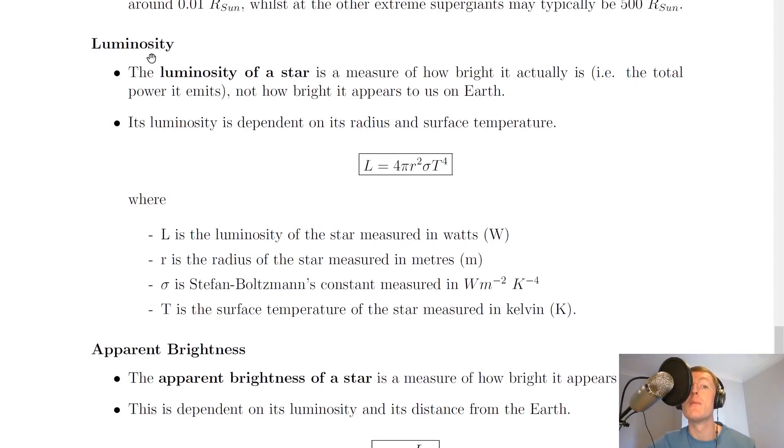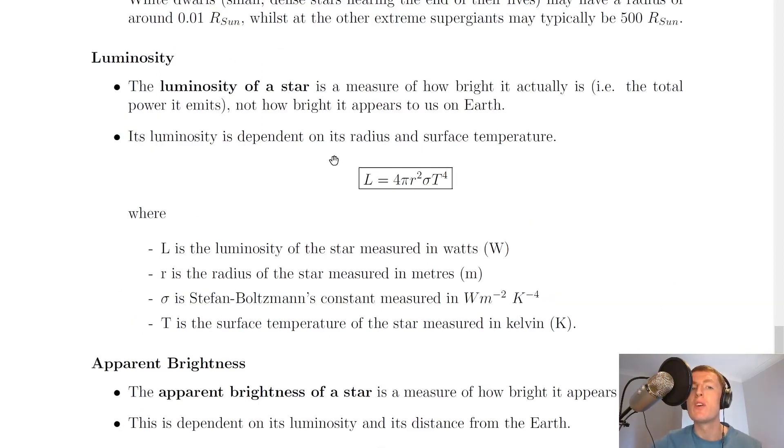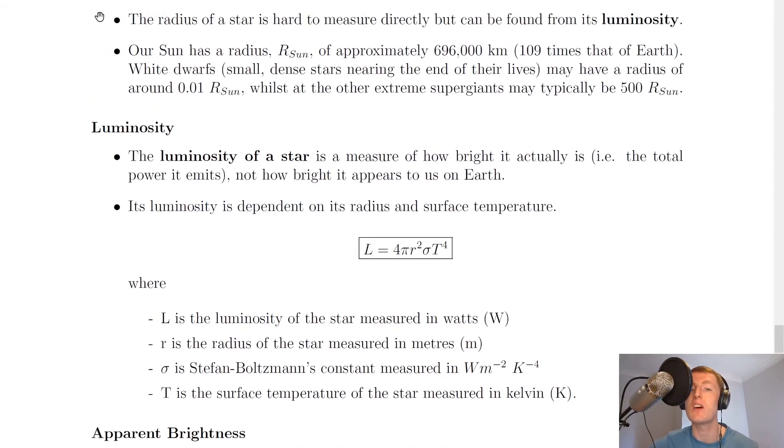Now we're going to look at luminosity, which is a pretty important property of stars. The luminosity of a star is a measure of how bright it actually is, i.e. the total power it emits, not how bright it appears to us on earth, because that is to do with the apparent brightness which we'll see shortly. Its luminosity is dependent on its radius and surface temperature. We just saw that luminosity can be used to find the radius of a star.